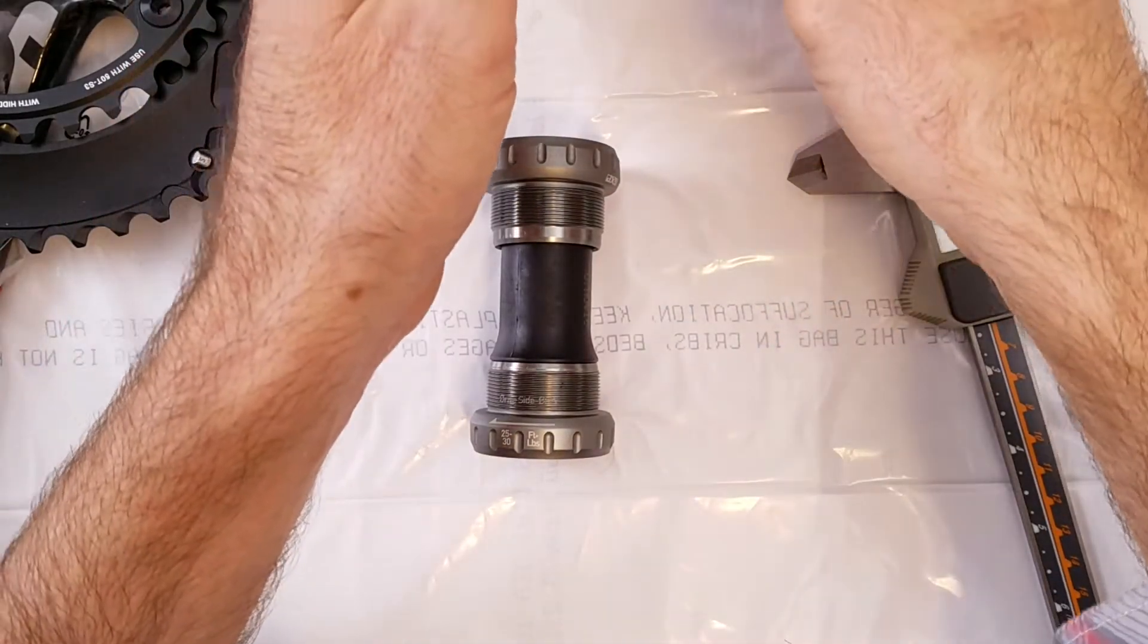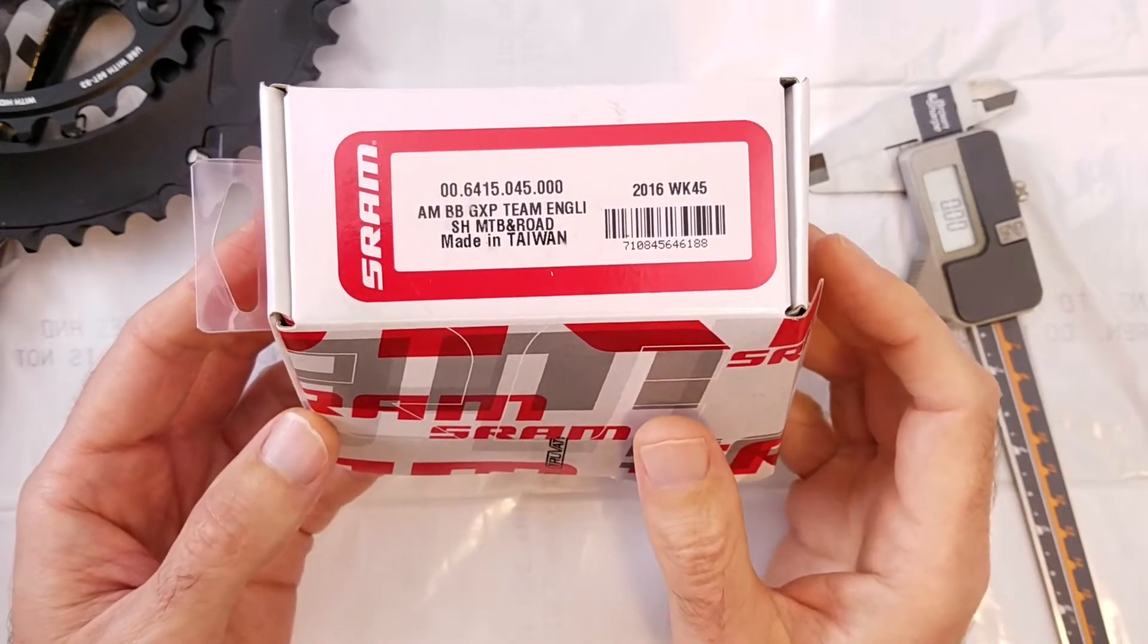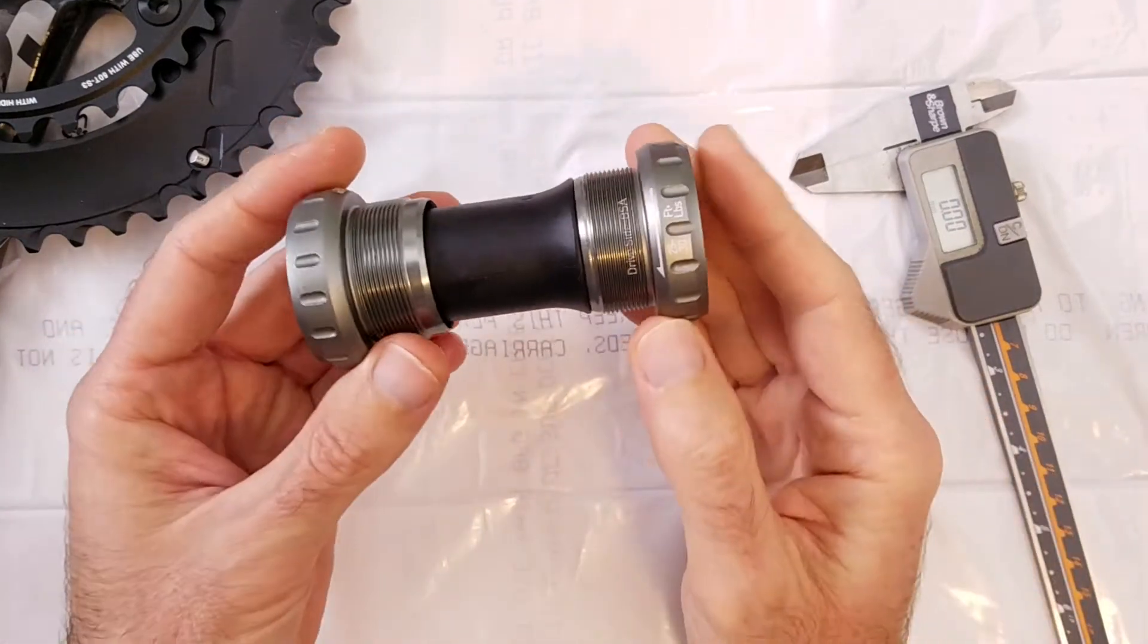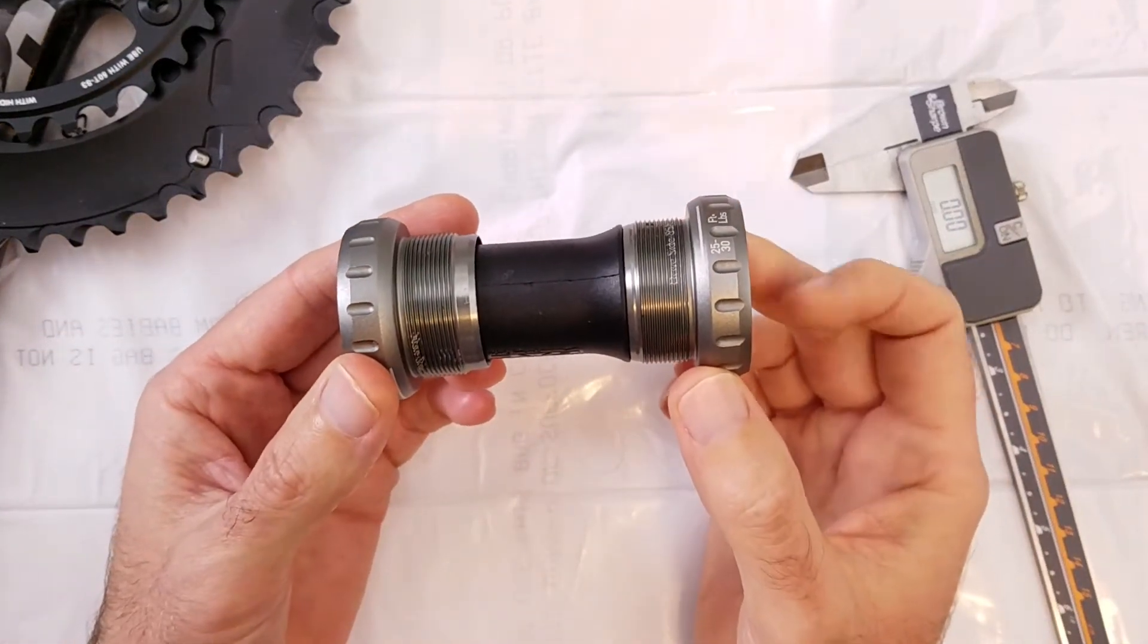This particular one is a SRAM GXP Team English Bottom Bracket. This one can accommodate shell widths of both 68mm and 73mm and anything in between.